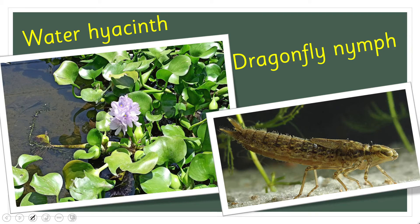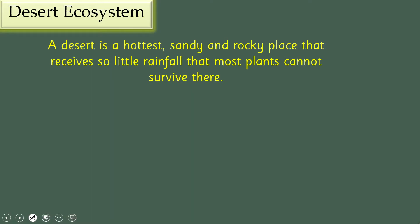Now, desert ecosystem. A desert is a hot, sandy, and rocky place that receives so little rainfall that most plants cannot survive there.